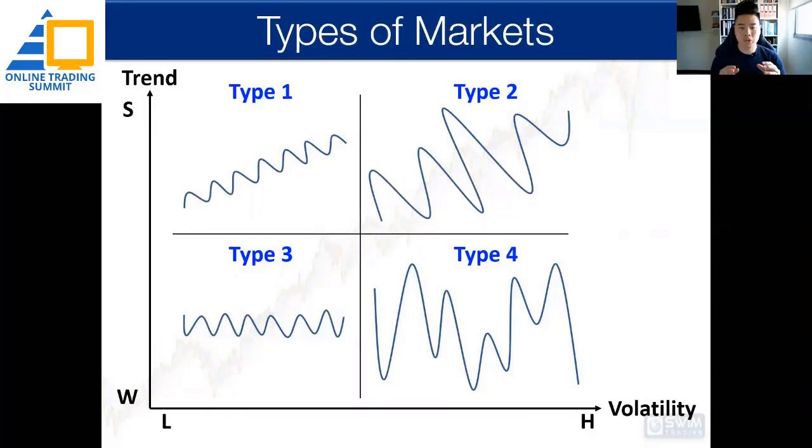The types of market - this is what I use on a broad basis to classify the types of market that we have. On the left hand side, you can see we have strong trend and weak trend. On the x-axis, the horizontal axis, you have low volatility and high volatility.